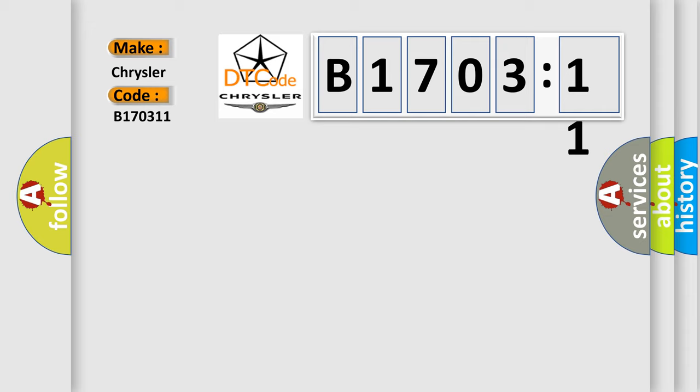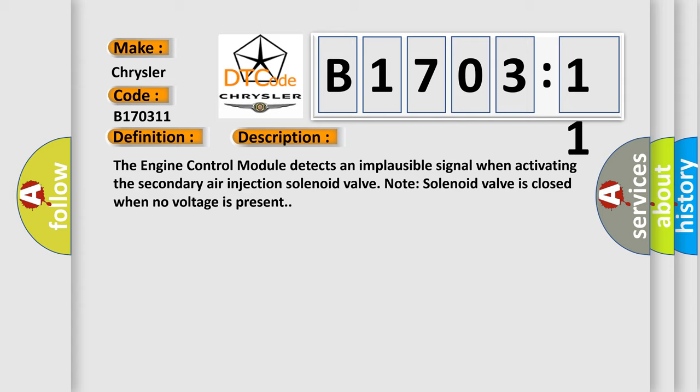The basic definition is Secondary Air Pump Valve Plausibility. And now this is a short description of this DTC code. The engine control module detects an implausible signal when activating the secondary air injection solenoid valve. Note: solenoid valve is closed when no voltage is present.